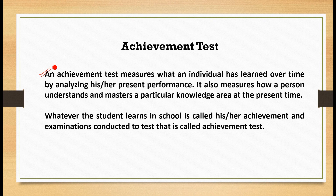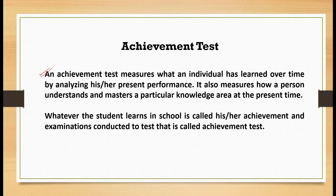To understand in simple words, let's take the example of a student in any class. The knowledge that a student acquires in a certain period of time is called his or her achievement. After that period of time is over, the teacher will examine the achievement of the student, and that test which the teacher conducts is called the achievement test. In simple words, whatever the student learns in school is called achievement, and examinations conducted to test that are called achievement tests.